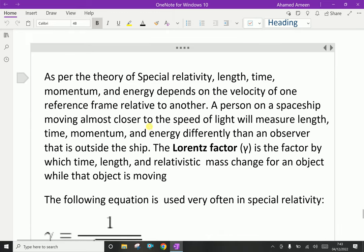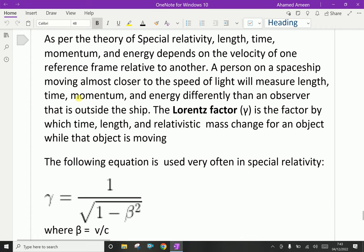Relativity formula. As for the theory of special relativity, length, time, momentum, and energy depend on the velocity of one reference frame relative to another. A person on a spaceship moving almost at the speed of light will measure length, time, momentum, and energy differently than an observer that is outside the ship. Whoever measures those things on the moving ship gets different values than who is measuring those things as a normal observer outside the ship, which is not moving.